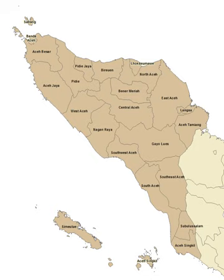Sulawesi will see four new regencies as well: South Talaud, or Talaud Selatan, created from Talaud Islands Regency in North Sulawesi; South Bone, or Bone Selatan, from Bone Regency in South Sulawesi; and Boliohuto Paguyaman from Gorontalo Regency and West Gorontalo from Pohuwato Regency in Gorontalo. There will also be two new municipalities: Tahuna from Sangihe Islands Regency and Langoan from Minahasa Regency, both located in North Sulawesi.